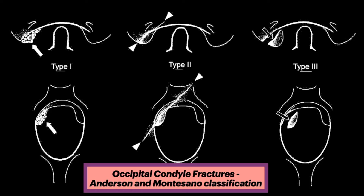There are three categories as outlined by the Anderson and Montesano classification system. Type 1 is a comminuted fracture associated with axial compression injury; it is usually stable. Type 2 is a basilar skull fracture extending into the occipital condyle, often associated with a direct blow to the lower skull, and is usually stable as well.